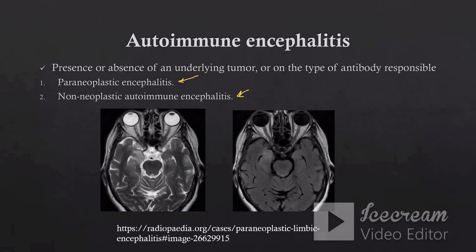As you see here in this case, we have the amygdala appearing swollen and the hippocampus appearing swollen, displaying abnormal high signal intensity on T2-weighted image and also abnormal high signal intensity on FLAIR image. So this one we should put in our consideration if we are dealing with a case of encephalitis. Autoimmune encephalitis rarely presents with epileptic fits. Most commonly the patient will present with peripheral neuropathy. Sometimes if it is involving the cerebellum, the patient can develop cerebellar ataxia. But in very rare cases, autoimmune encephalitis can be presented by epileptic fits.